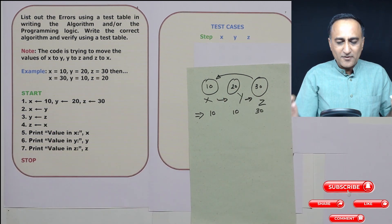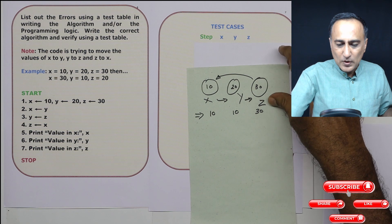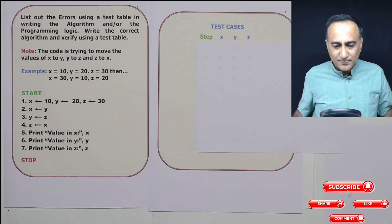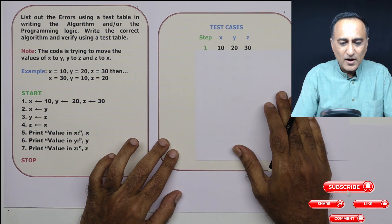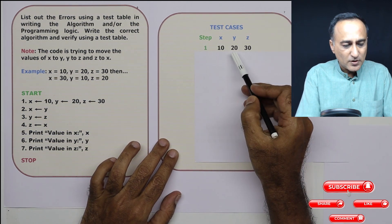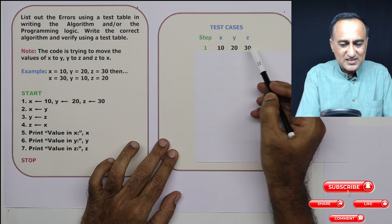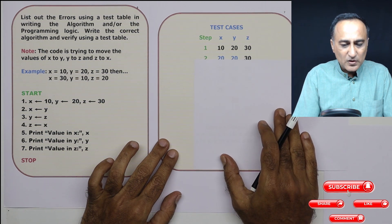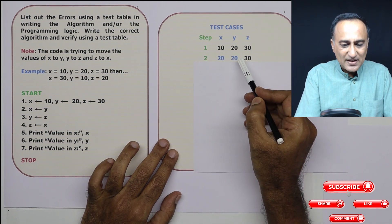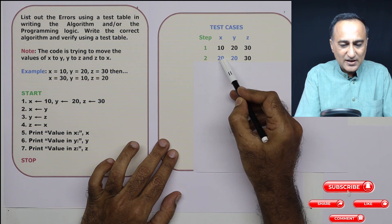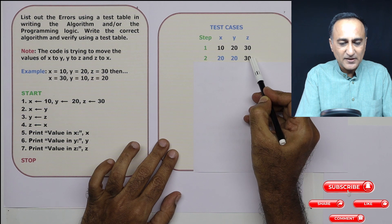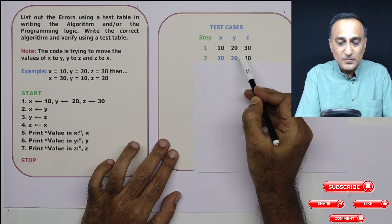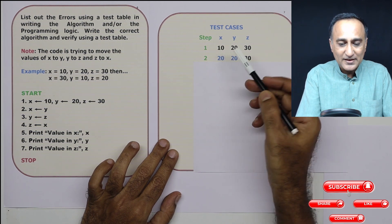Using a test table we need to verify whether this logic is correct or not. Almost certainly there is problems in this logic. But the best way to always analyze and understand logic is through a test table because then you're very systematic, organized and you're able to solve the problem very easily. So initially this is 10, 20 and 30. In step number one, what I have done is y's value is copied to x. So x also becomes 20, y becomes 20, z becomes 30. Here itself you will have noticed the problem, we have lost the value of 10.